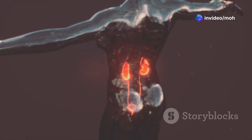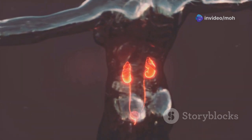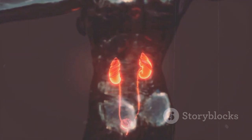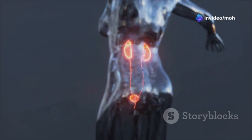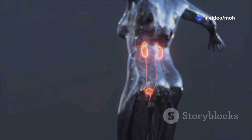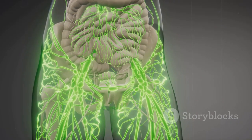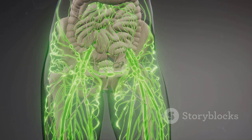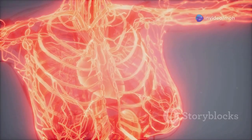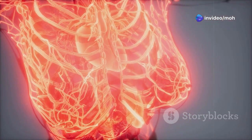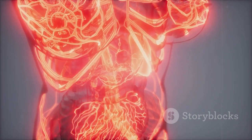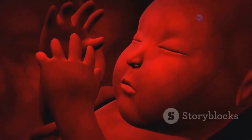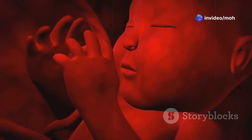Next, we encounter the intermediate mesoderm, a slender ribbon nestled between the paraxial and lateral mesoderm. This region, smaller yet no less vital, lays the foundation for our urogenital system, responsible for the production and elimination of waste products. Finally, we arrive at the lateral mesoderm, the farthest from the midline of the embryo. This region, destined to form the lining of our body cavities and contribute to the development of our circulatory system, holds the key to understanding the origins of our internal spaces. It is within the lateral mesoderm that we witness the birth of cavities — those essential compartments that will one day house our organs.